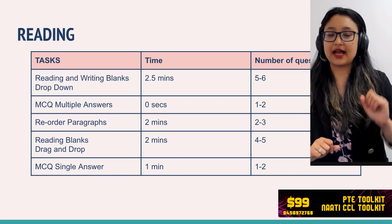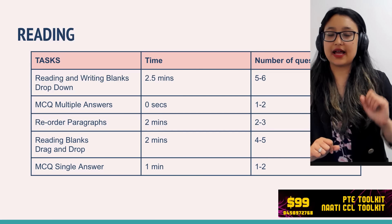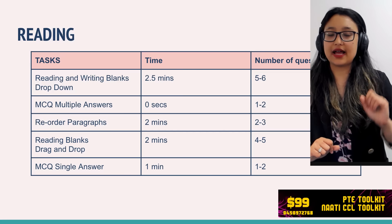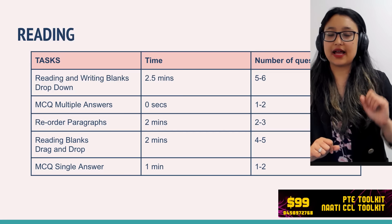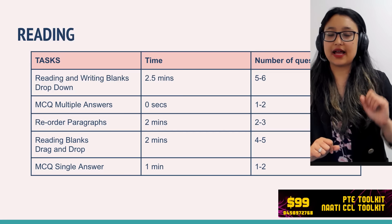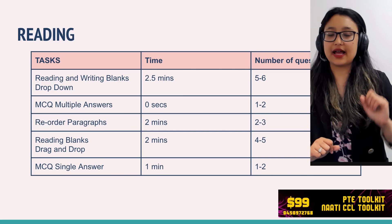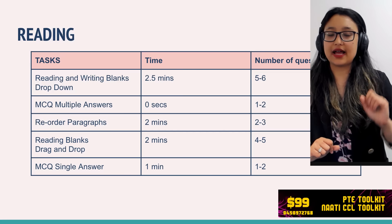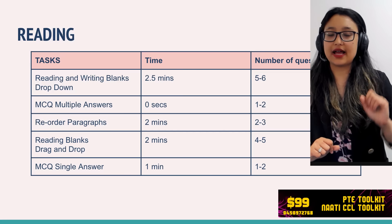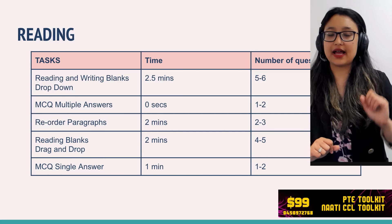The fifth and last question in the speaking section is answer short questions. These are very easy general knowledge questions — for example, 'Who do you go to when you have a toothache?' and you simply answer 'a dentist.' Getting 90 in speaking is an easy goal: read aloud — read the passage, repeat sentence — repeat it, describe image — use a template for 10 to 15 seconds, retell lecture — 10 to 15 seconds, answer short questions — just say your answer or 'I don't know.'